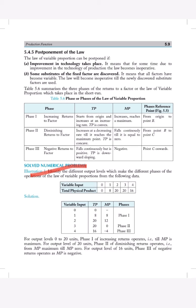So first of all, in this first illustration, identify the different output levels which make the different phases of the operation of law of variable returns. Variable inputs are these. Total physical product is this. We have to find out marginal product.